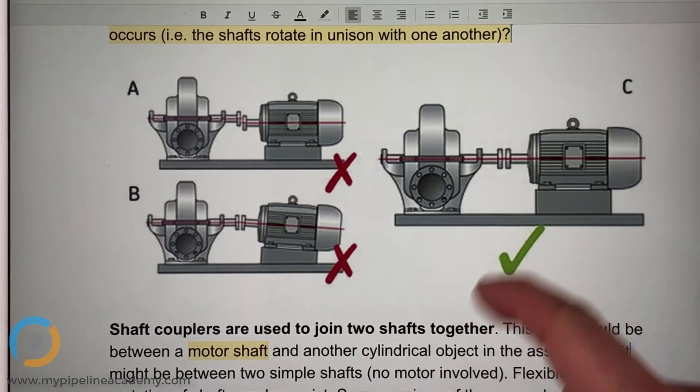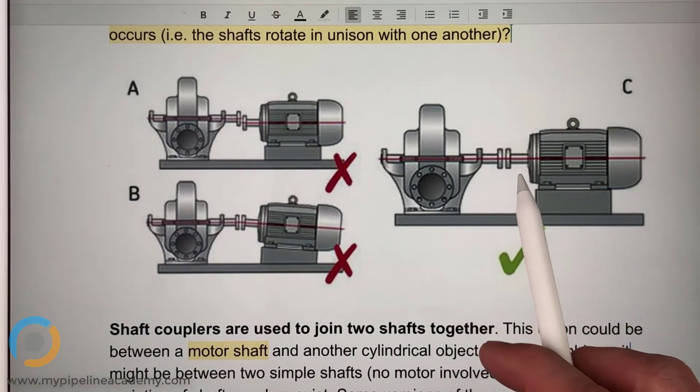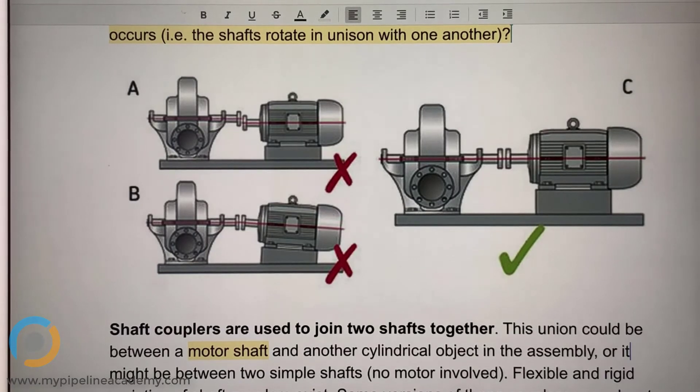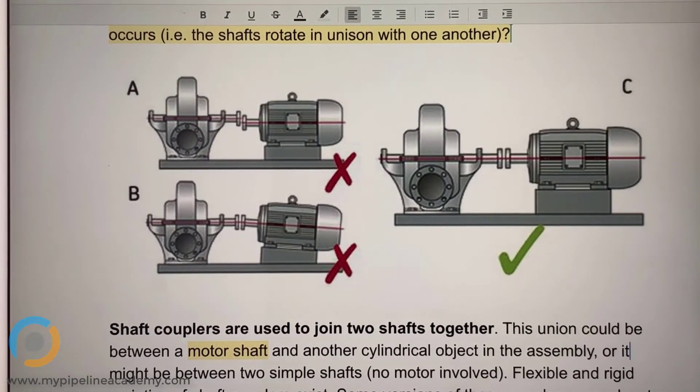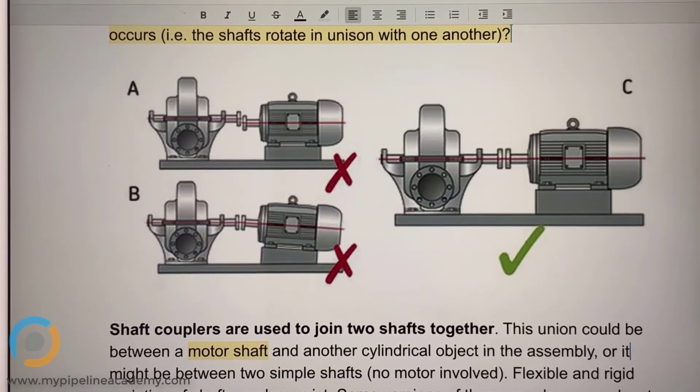So here's a motor. What is a motor? What's your definition of that? A motor is just something that rotates. It produces movement. It produces rotational movement. Yeah.